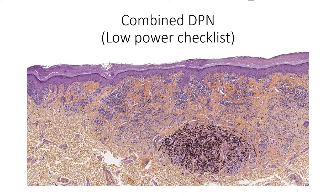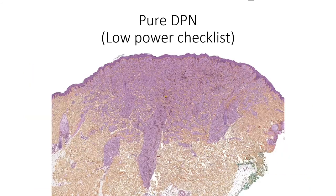Another case with a common nevus and the clonal area with many melanophages. For pure DPN, there will be no clonal area or common nevus. The whole lesion is of DPN subtype, and there's often vertical expansion into the subcutis. You can also see the grid of melanophages.